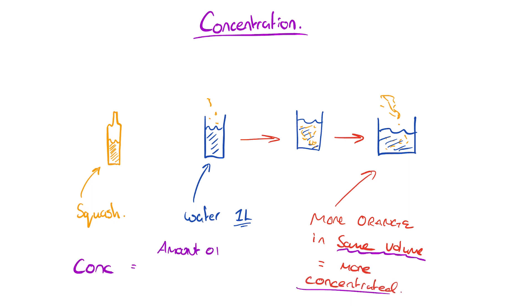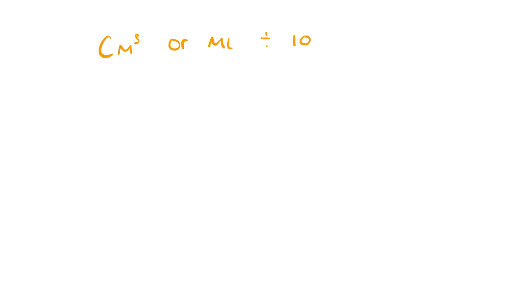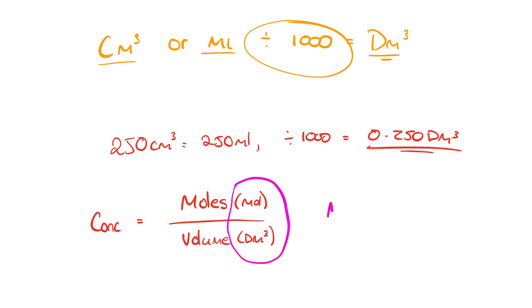Concentration is the measure of amount of substance per unit volume. The amount of substance is measured in moles, divided by the volume it's dissolved in. Volume is measured in decimetres cubed (dm³) in chemistry, though equipment often uses centimetres cubed (cm³) or millilitres. To convert, divide by 1000 — so 250 cm³ becomes 0.250 dm³. This gives units of mol dm⁻³, which is how concentration is written in exams and textbooks.